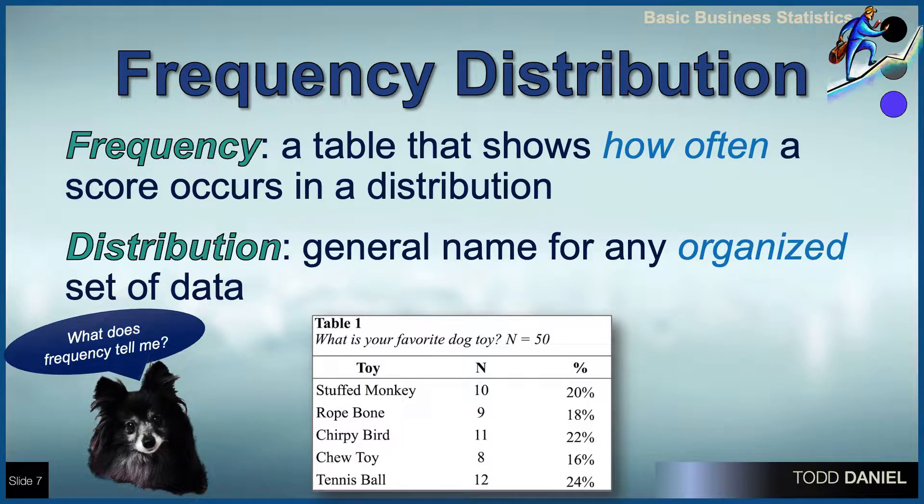One of the things that we did with our variables was to put them into distributions. We learned that what is common about distributions for categorical data and distributions for continuous data was this measure of frequency. Frequency answered two questions: how many and how much. Let's take a look at some distributions to see how we answered those two questions.